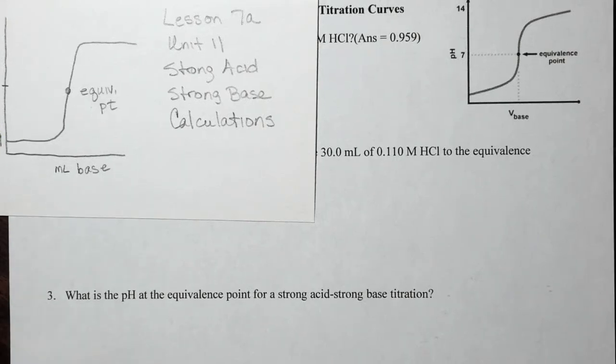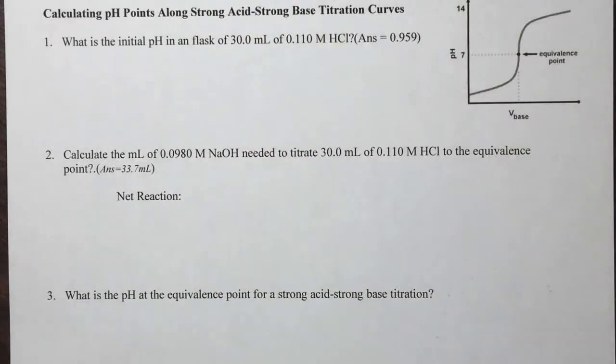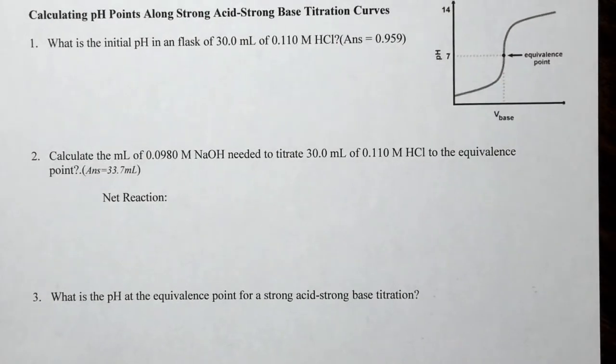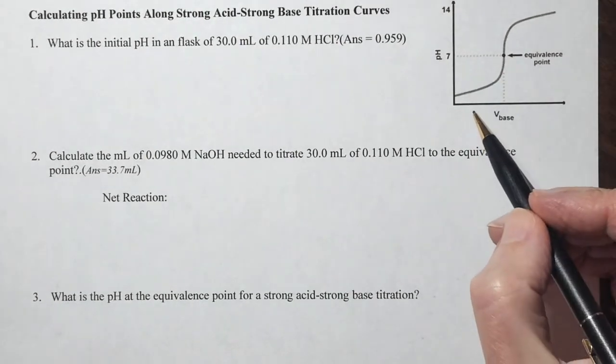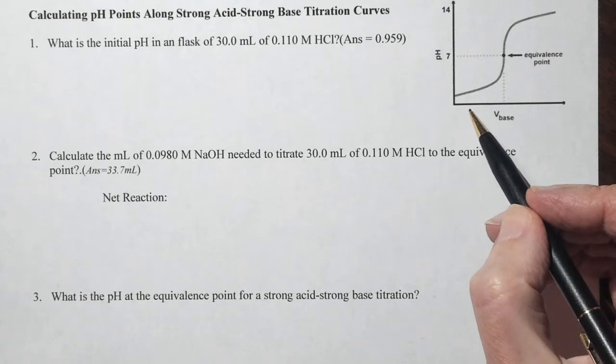This is Lesson 7A, Unit 11, Strong Acid-Strong Base Calculations. So what we're going to do is calculate the pH points along a strong acid-strong base titration curve.